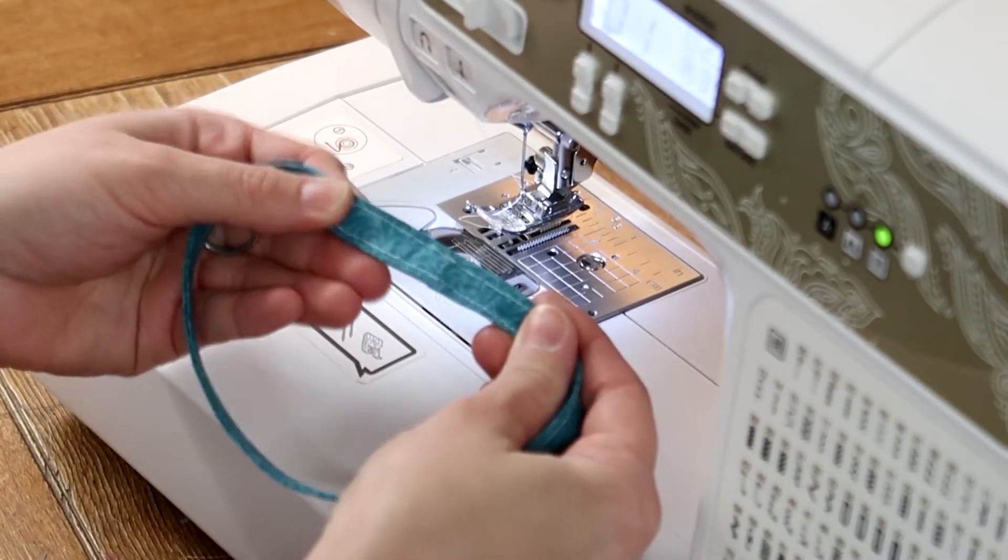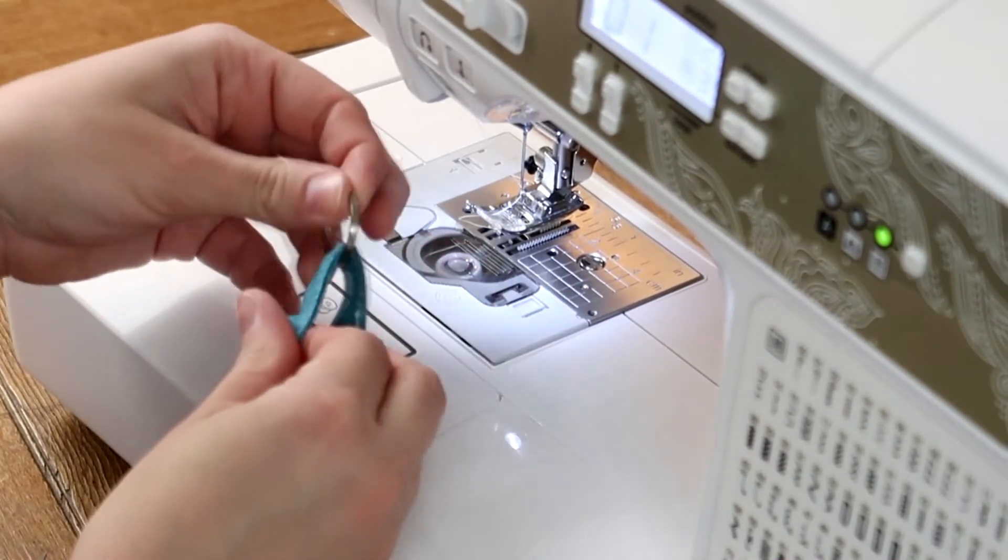Find where the seam is in your fabric, place the split ring on top of that, and then topstitch it down.